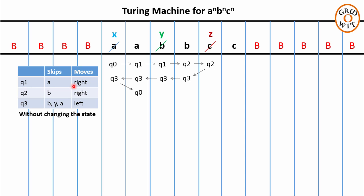During the second iteration we have to replace this a with x, this b with y, and this c with z. So q0 on reading a will replace it with x, takes a right move, and changes its state to q1. q1 on reading y will skip it and take a right move to reach the next symbol b. Note this information in the table: from the second iteration onward, q1 also skips the y's along with the a's.